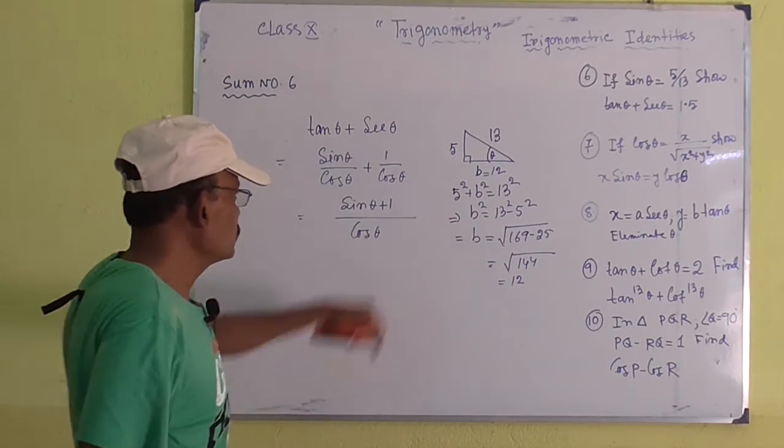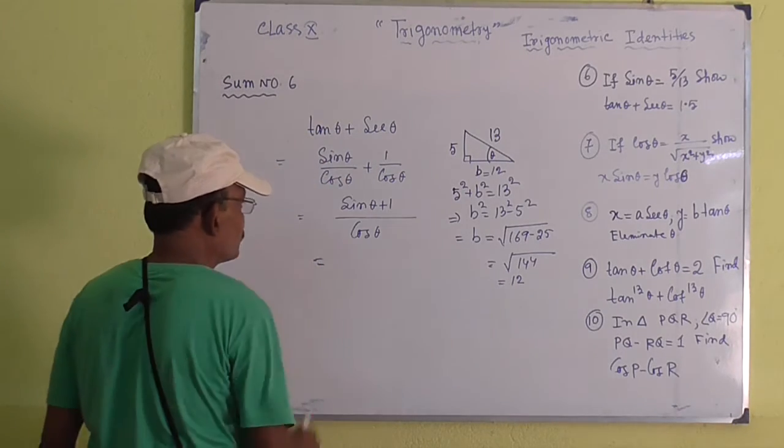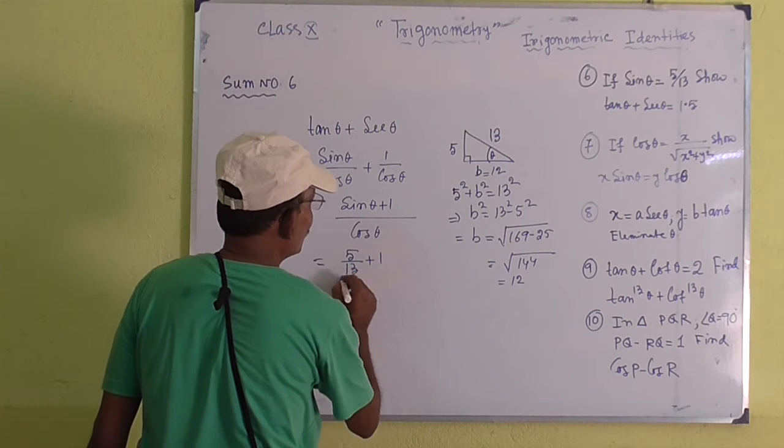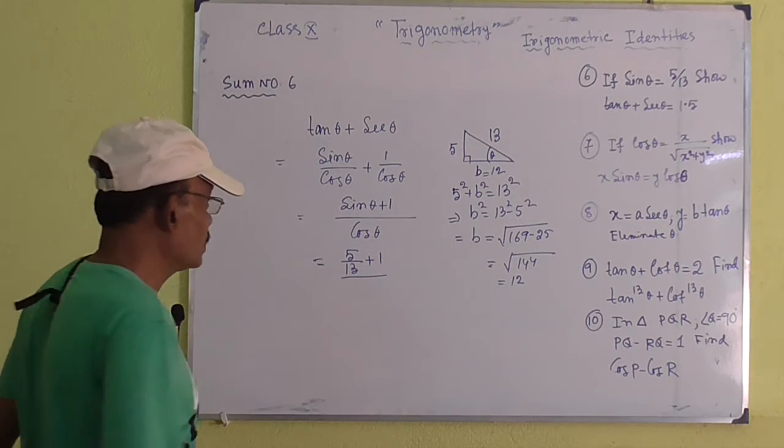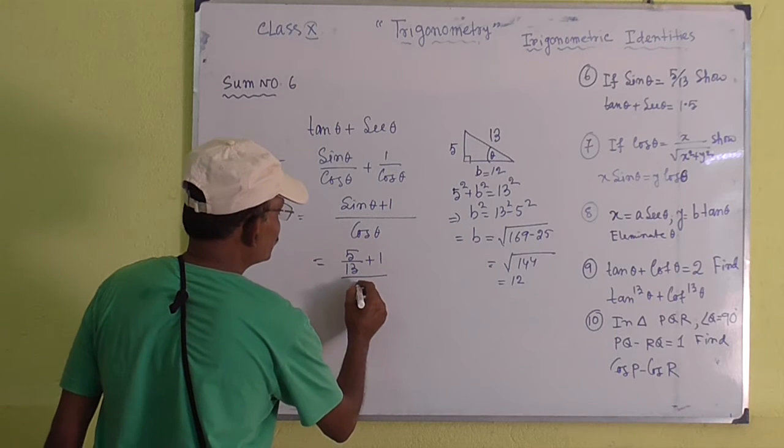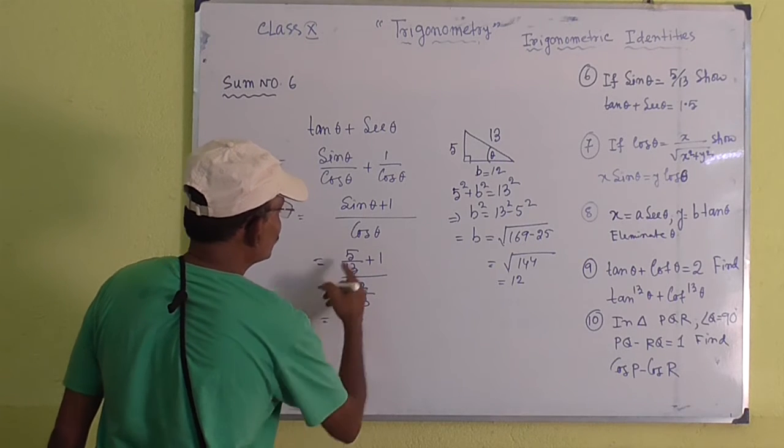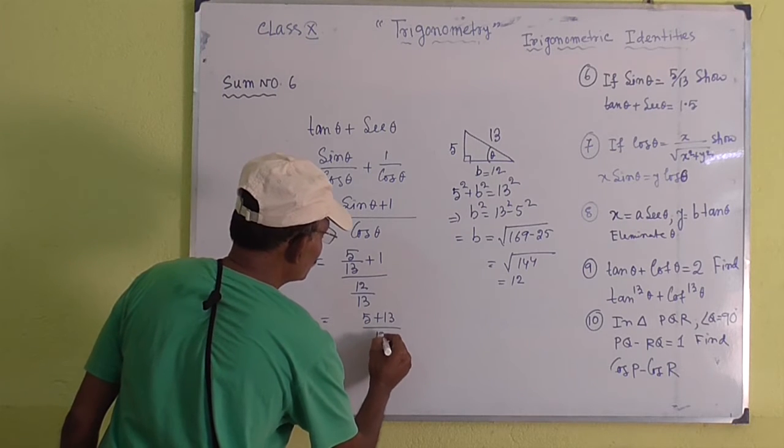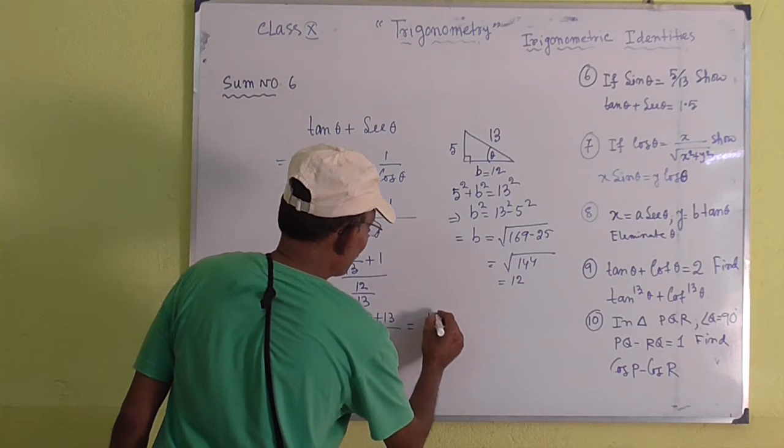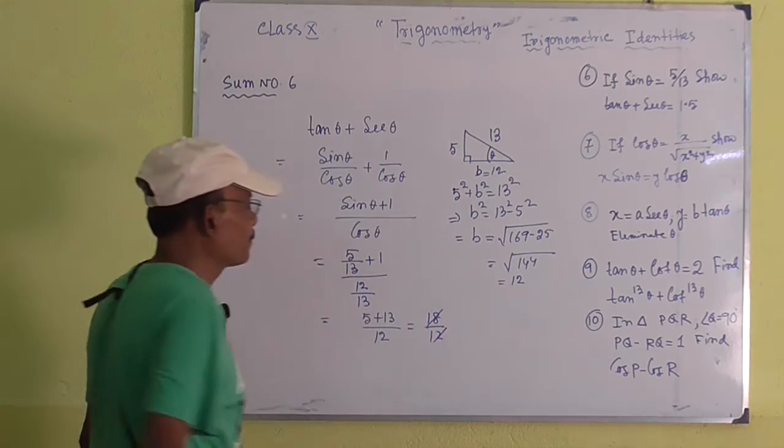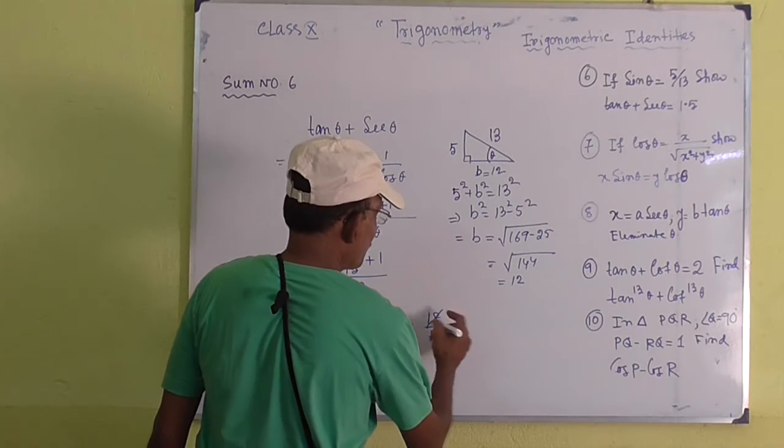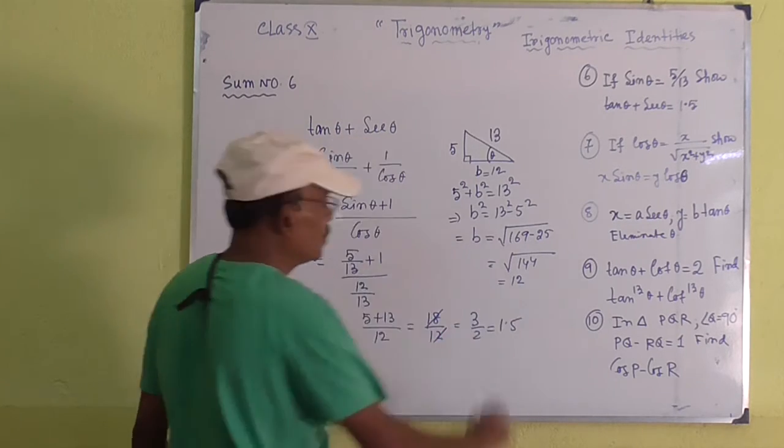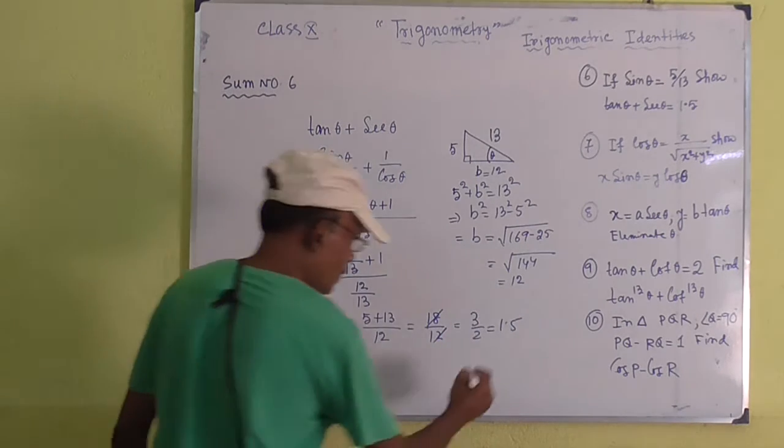Now, putting the value of sin theta, we get 5 by 13 plus 1 by cos theta. Cos theta will be 12 by 13. So it gives the result 5 plus 13 by 12, that means 18 by 12. Cancelling, we have 1.5. Proved.